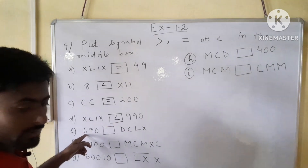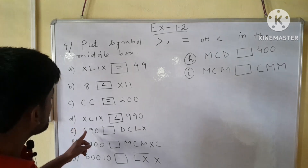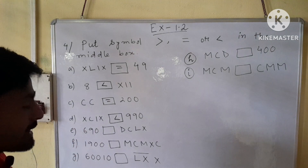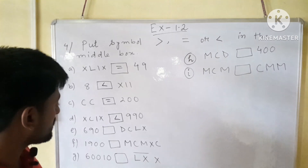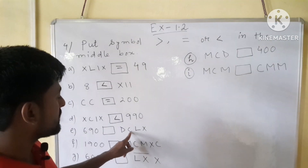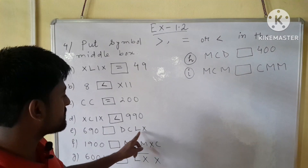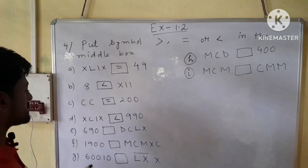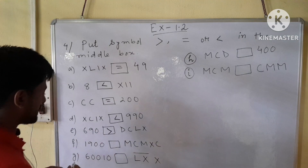Number E: we have 690 on the left. But on the right side of the box, DC makes 600, L makes 50, then 650, and X makes 10, giving 660. So our symbol will be greater than.